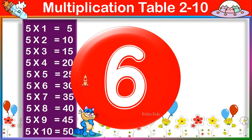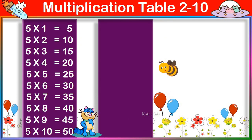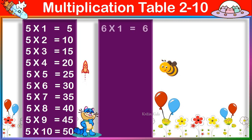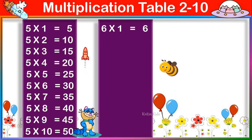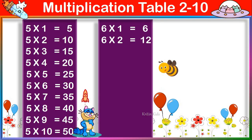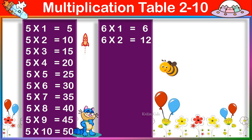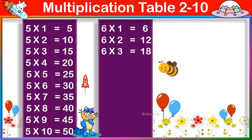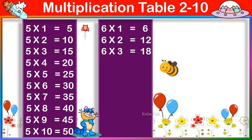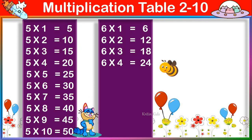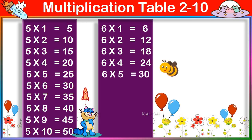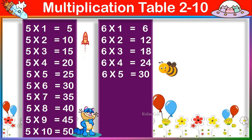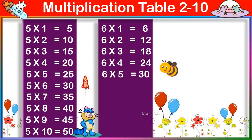Multiplication Table of 6. 6 one's are 6, 6 two's are 12, 6 three's are 18, 6 four's are 24, 6 five's are 30.